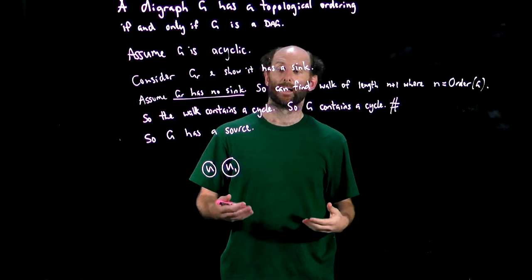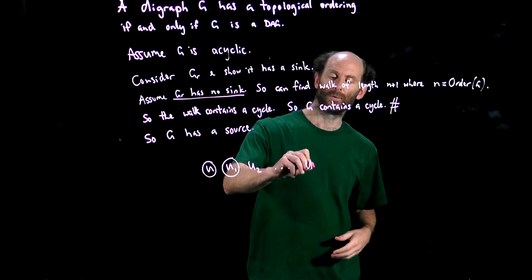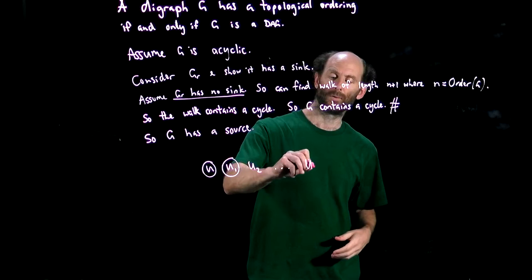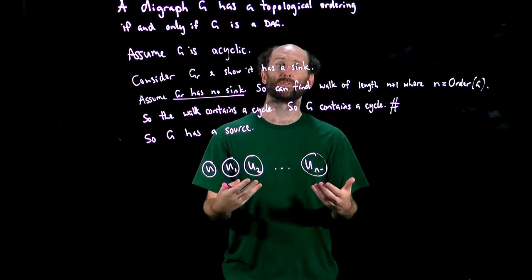So we'll end up with an ordering u, u_1, u_2 up to u_(n-1), where each of these nodes was chosen because it was a source that had zero in-degree, and that gives us a topological ordering that we're after.